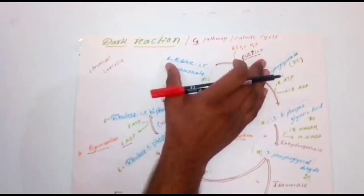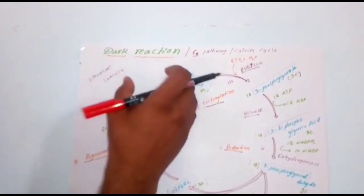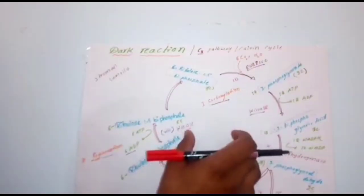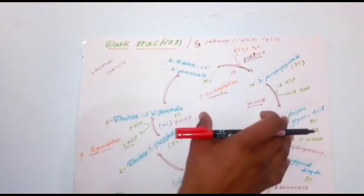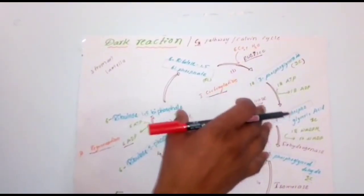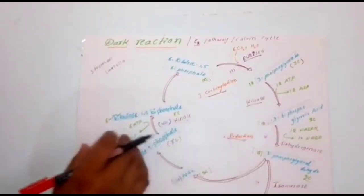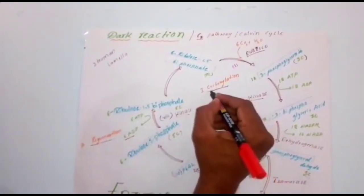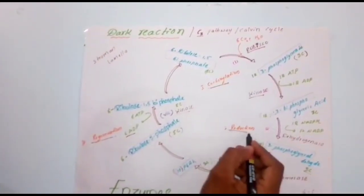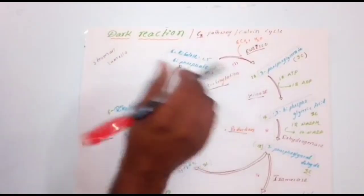Dark reaction takes place in the stroma lamella. In this process, only carbon dioxide is going to be used, then ATP and NADPH — two forms of energy — are going to be used. This process takes place without chlorophyll, water, or sunlight. In this process, there are three major stages: one is carboxylation, second is reduction, and third is regeneration.